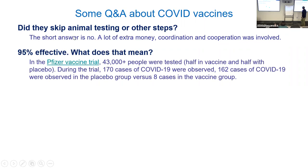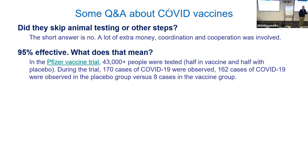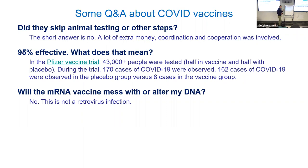What does 95% effective mean? Looking at the Pfizer trial with 43,000 people — pretty much half were placebo (saline injection) and half received the vaccine. There were 162 cases of COVID-19, of which only eight cases were in the vaccine group. If you do the math, 95% of cases were in the control group versus 5% in the vaccine group. That's where those numbers come from.